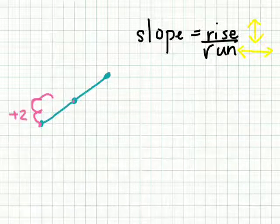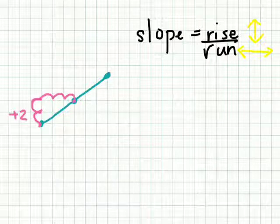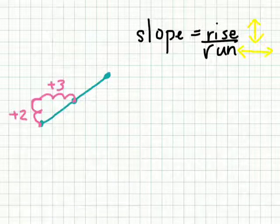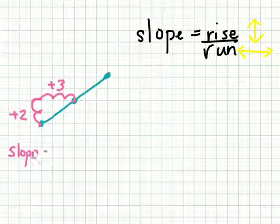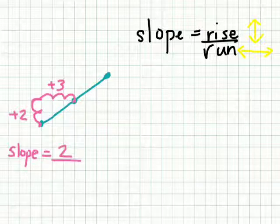Positive two because we're going up by two. And then one, two, three. We're going across by three. So we have our rise. The slope equals, what's the rise? The rise is positive two, and the run is positive three. That's the slope of the line.